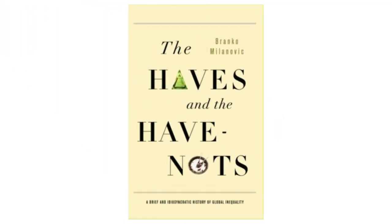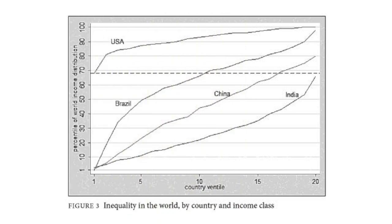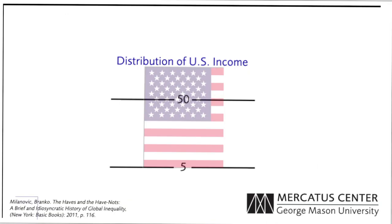In his 2011 book, The Haves and the Have-Nots, World Bank economist Branko Milanovic documents the incredible and humbling disparity in the human condition around the world. One figure on page 116 is particularly informative, and it's gotten a lot of attention from both economists and journalists. It shows inequality within four countries in the context of inequality around the world. As informative as the chart is, however, it can be difficult to wrap one's head around, so I thought I'd reconceive the chart to draw out what I see as its most salient points. Some information is lost in my version, but I hope that some understanding is gained.